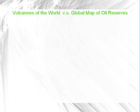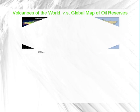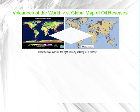The volcanoes of the world versus the global map of oil reserves — were the map layers on the right made by utilizing fossil theory?